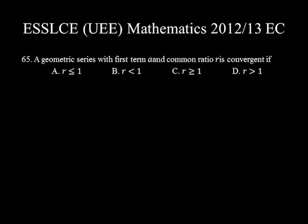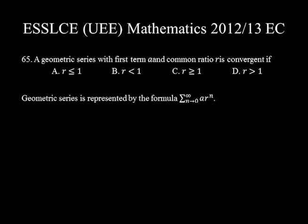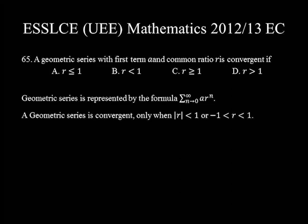Question number 65. A geometric series with first term a and common ratio r is convergent if — a geometric series is represented by the formula Σ a·r^n, n from 0 to infinity. A geometric series is convergent only when |r| < 1, that is, −1 < r < 1. So none of the choices can be the answer. That's all for this lesson. Stay safe.